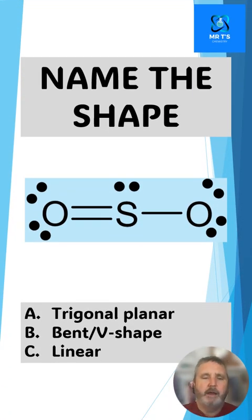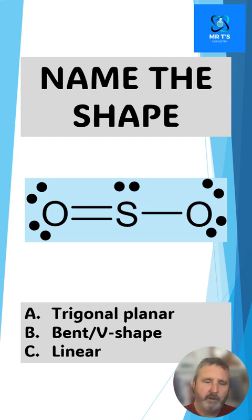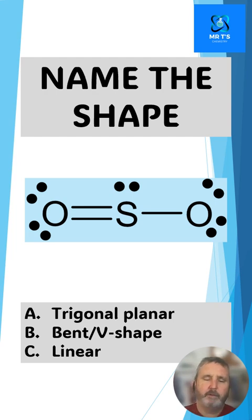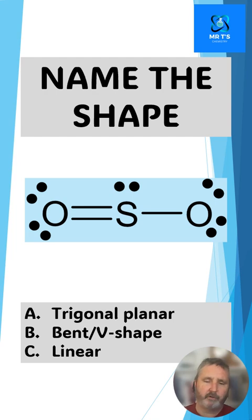Hi, it's Mr T here. I've got a series of Lewis diagrams here, or Lewis shapes, and what I want you to do is see if you can identify what is the shape of the molecule that it will form. You're going to be using the number of electron density regions and knowing that they push away from each other as far as possible to work out your shape.